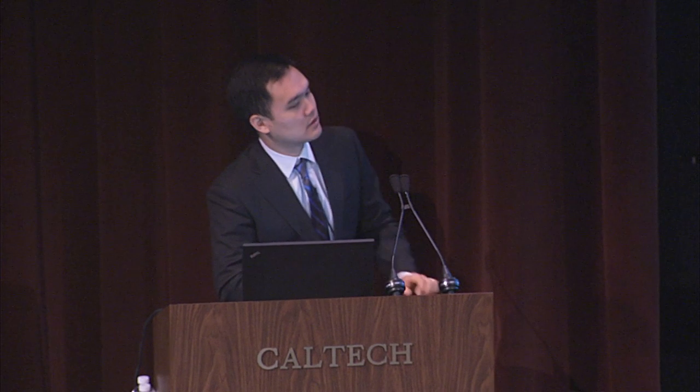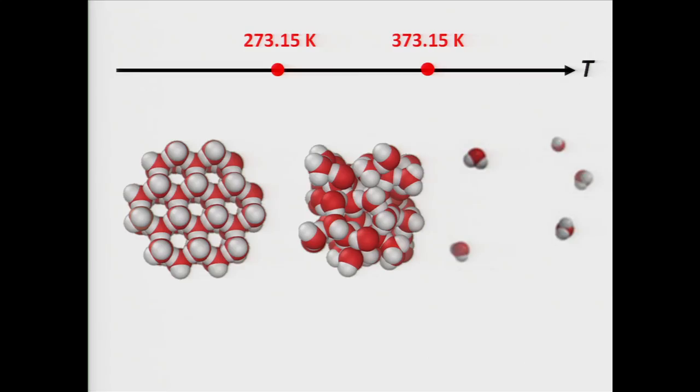Now, transitions between phases can happen as a function of a change of some environmental condition. The case we're most familiar with is probably temperature. As you raise the temperature of ice, you go through two phase transitions, sometimes what we call critical points. These critical points relevant to H2O happen to be the familiar critical points we encounter in the form of melting points and boiling points.